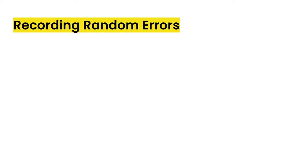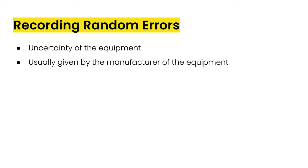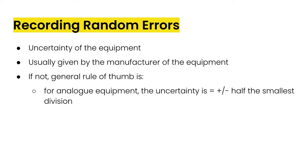So if we're recording random errors, then like I said previously, these are due to the uncertainty of the equipment. And they're usually given by the manufacturer of the equipment. And if not, the general rule of thumb is if it is analog, so that means like a ruler or something else that you're measuring that is not digital, the uncertainty is plus or minus half of the smallest division.